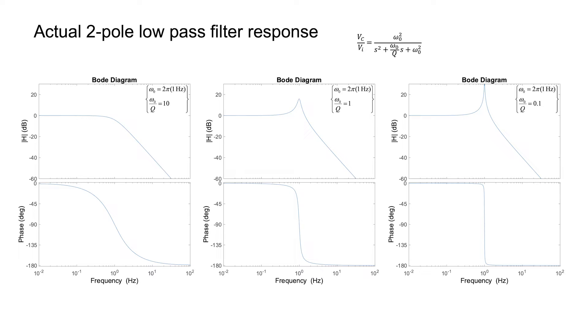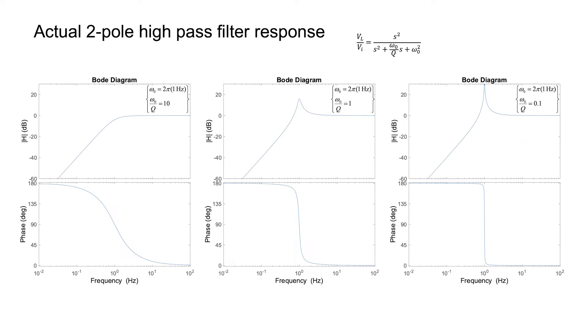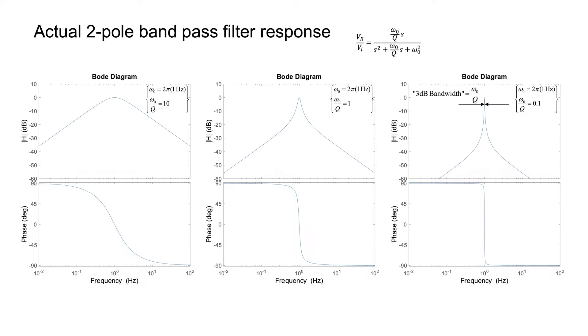Likewise, with the high-pass filter, the higher the Q, the more of a peak we get right at the corner frequency of the filter. The same thing is also true with the bandpass filter. The higher the Q, the taller the mountain that sits right at the center of the passband.